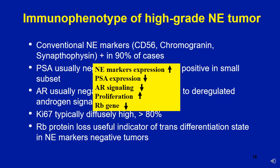Here is a summary: in a typical high grade neuroendocrine prostate cancer, expect increased neuroendocrine marker expression, decreased PSA expression, decreased AR signaling, increased proliferation, and decreased retinoblastoma gene expression. If the immunophenotype does not support this and morphologically you have borderline features, you should resist calling it high grade small cell neuroendocrine differentiation.